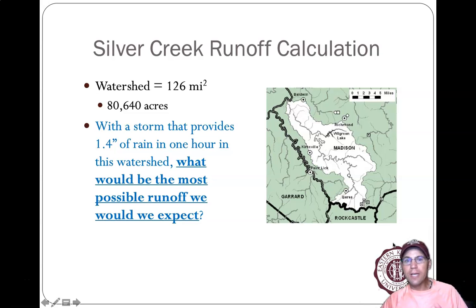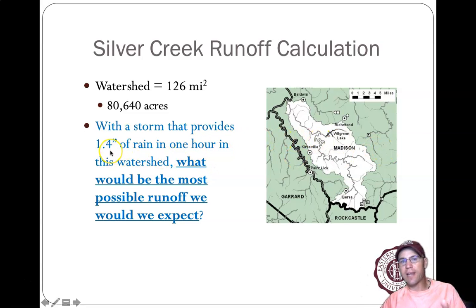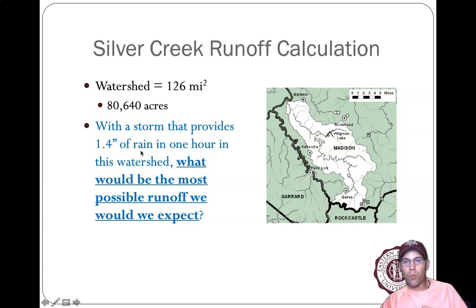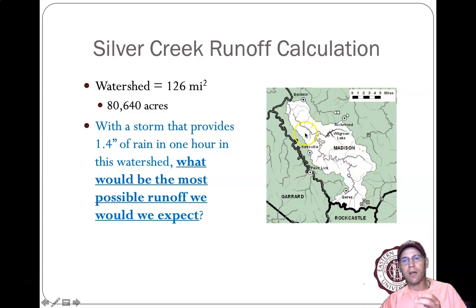One of the reasons why we do work with runoff is because we might be tasked with flood control efforts and emergency preparedness. You might have situations where a typical 1.4 inches of rain falls in a given hour, but there might be situations where you have a 4-inch-per-hour rainstorm — what's that going to do to a watershed like Silver Creek and the people at the bottom of it, 80,000 acres of watershed?